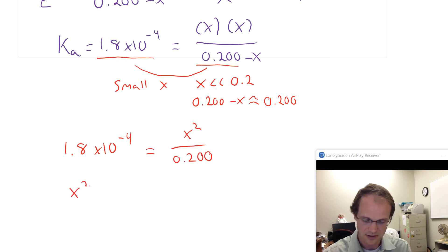We get that X squared, we multiply both sides by the 0.2, is equal to 3.6 times 10 to the minus 5th.